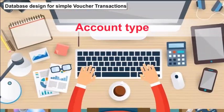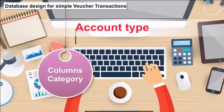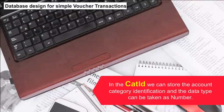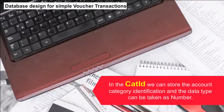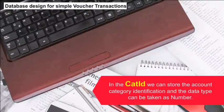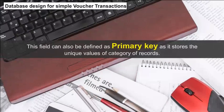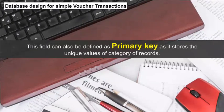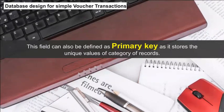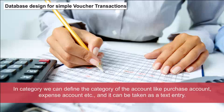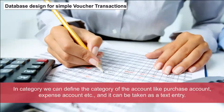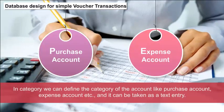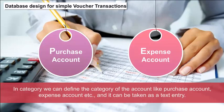In the Category ID, we can store the account category identification and the data type can be taken as number. This field can also be defined as a primary key as it stores unique values. In Category, we can define the category of the account like purchase account, expense account, etc., and it can be taken as a text entry.